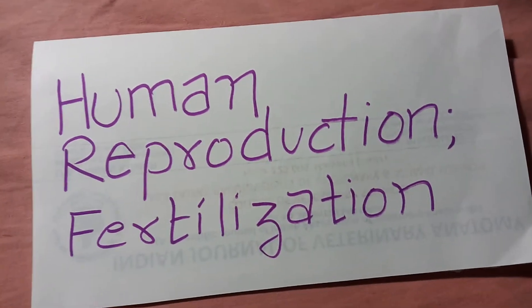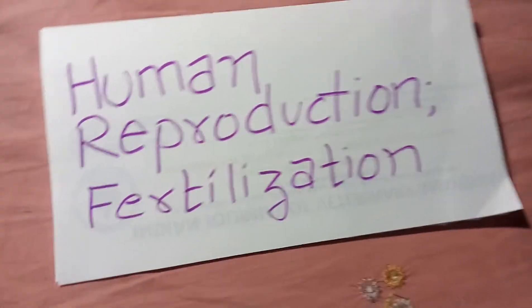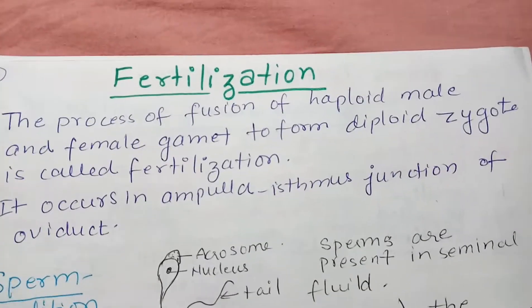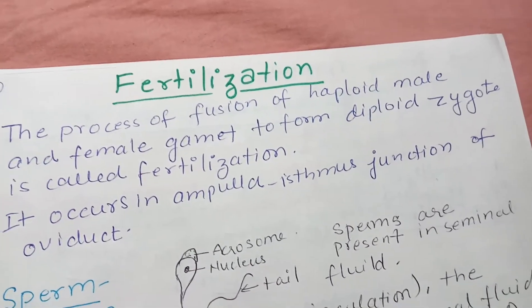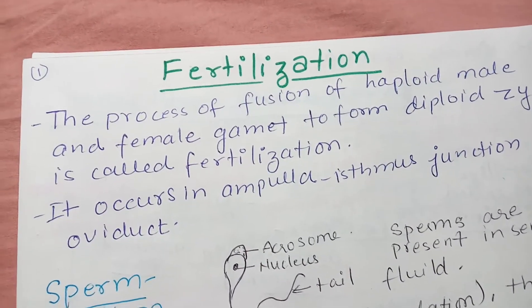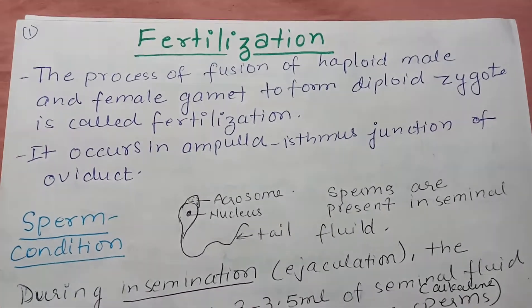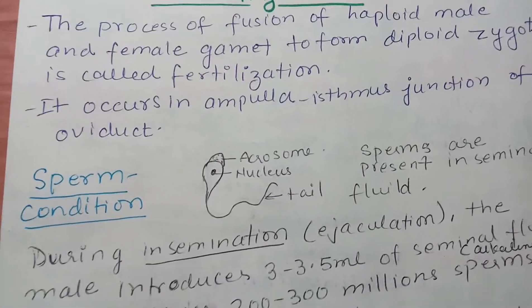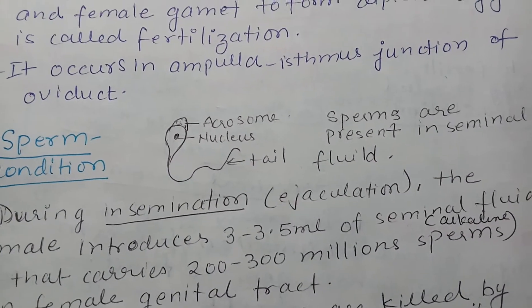Today we will be talking about fertilization during human reproduction. Fertilization is the process of fusion of haploid male and female gametes to form a diploid zygote. This process occurs at the ampulla-isthmus junction of the oviduct.